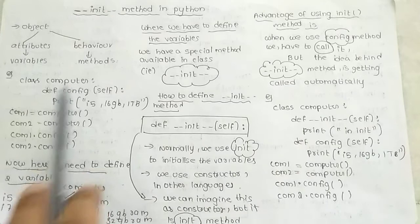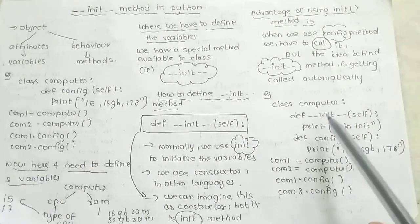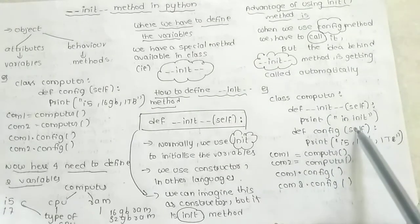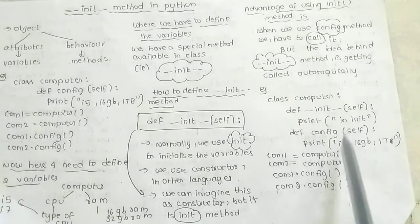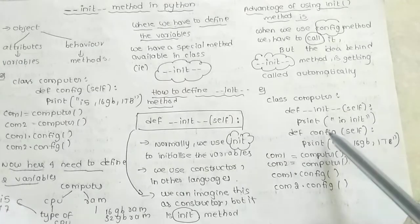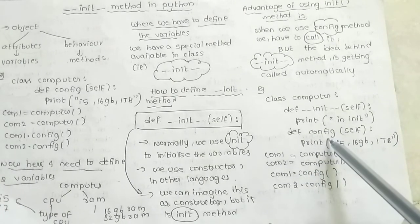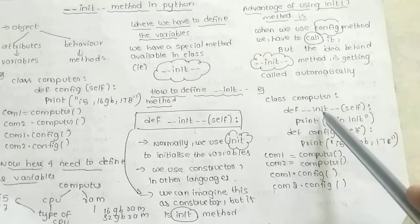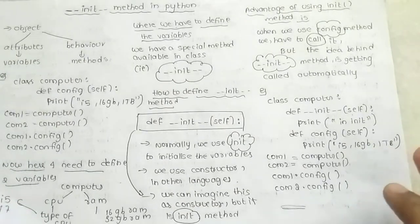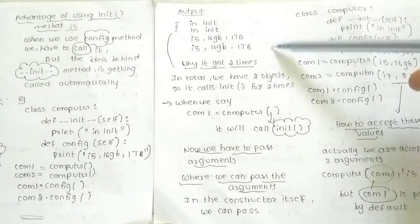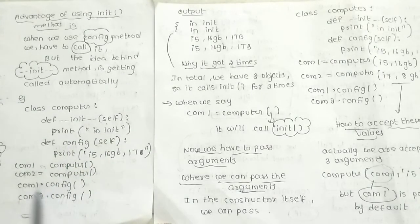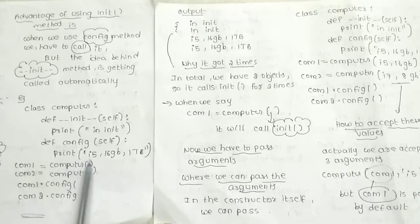In this code, I will define the Computer class and use the init method. I will create the init method and print a statement. Then I will use the config method and print a statement. I will define the config method and call it. The init method will be called automatically without needing to call it explicitly.